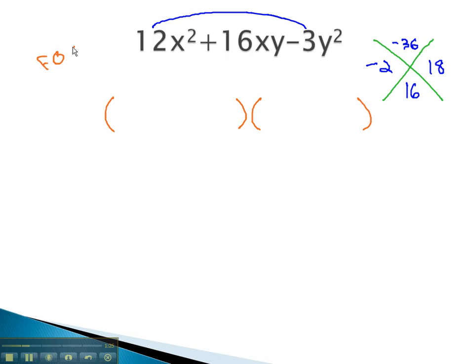Using FOIL as a guide, the F comes from the first, 12x squared.